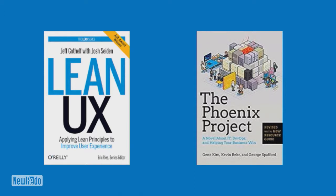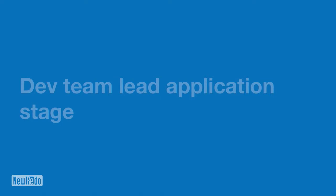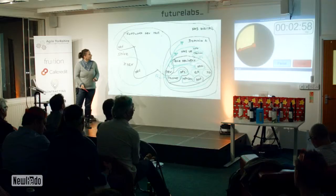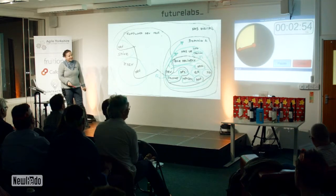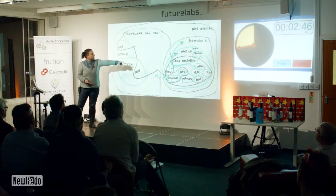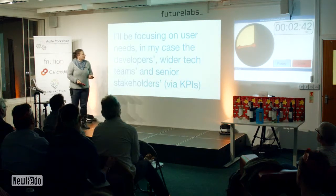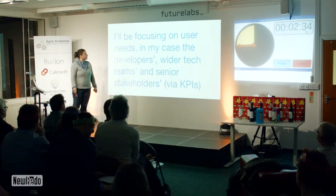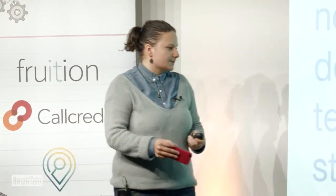All of these things were related to how I managed to do the Dev Team Lead application stage. All of this learning helped me pitch what I was going to do in the first 100 days. This is a diagram of where we operate in NHS Digital — we're pretty much a Dev Team but we get to interact with all these people. I focused the pitch for the Dev Team Lead job on user needs, because I'd learned about those and they were great. In my case the users were the developers, the wider tech teams, and the senior stakeholders via KPIs.